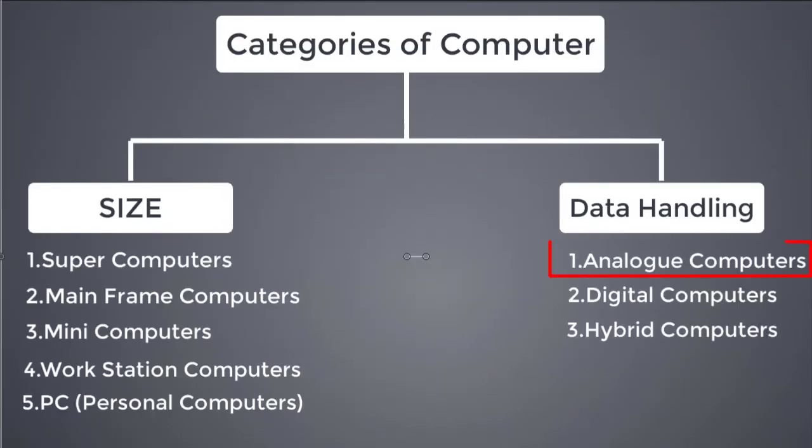Now, categories based on data handling — there are three types. The first is Analog computers. Analog computers work with continuous physical data. For example, if you have a bike or a car, the speedometer is an example of an analog computer. Other examples include thermometers that check temperature and tire pressure gauges.